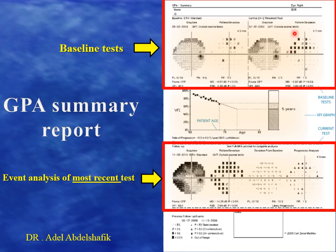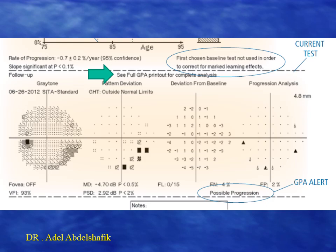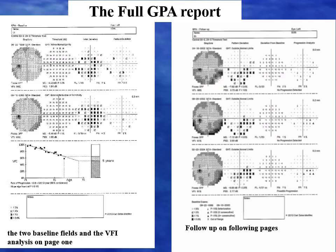In this printout, these are the two baseline examinations, this is the current present examination, and this is the progression probability for the current test. If you want to see all the tests in between, you can ask for the full progression view, as shown here — the first two baseline tests and each of the tests in between with the progression probability analysis.